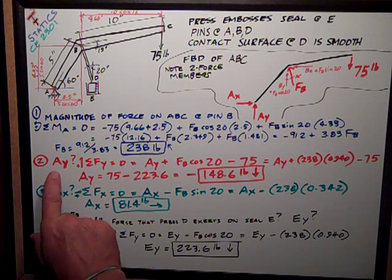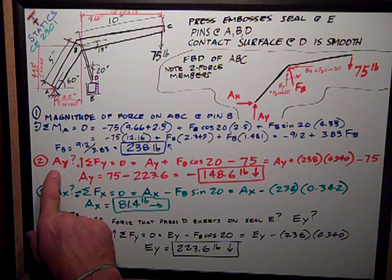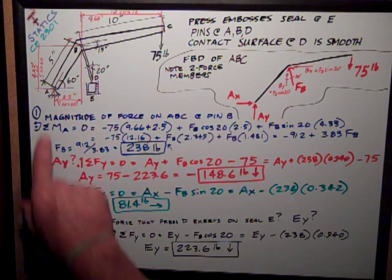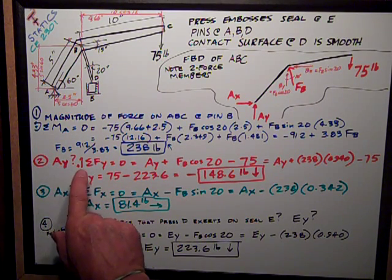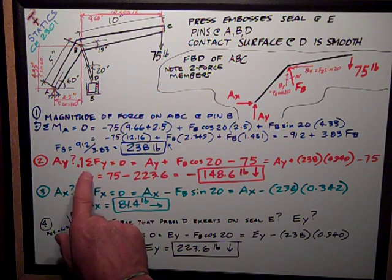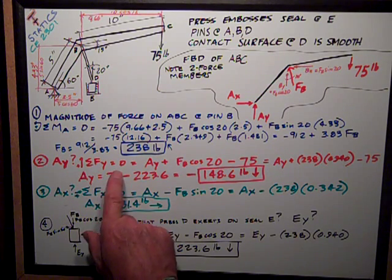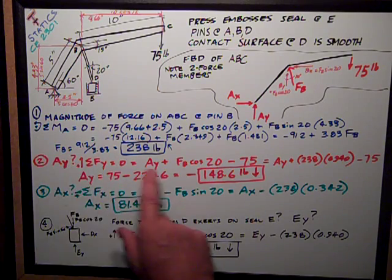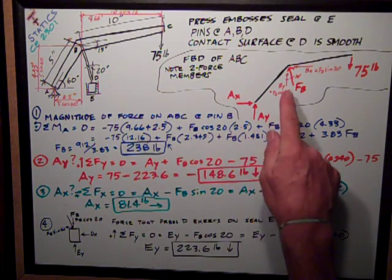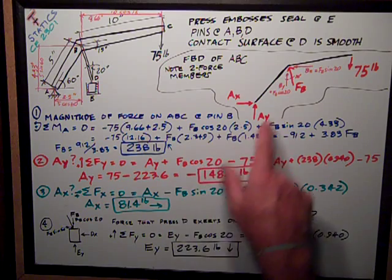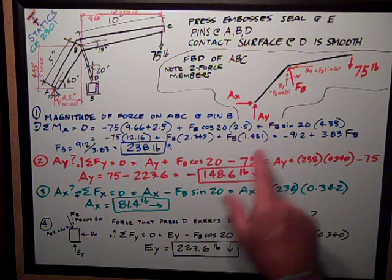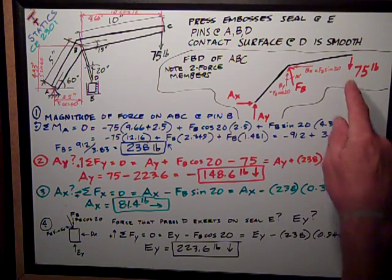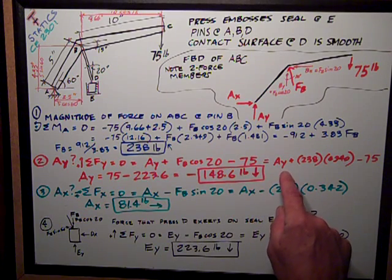Number two, or part two, I'm asked, what's the vertical force at A? It's really AY. Summing forces in the Y direction, positive is up, by my assumption. That's equal to AY, plus, because it's also up, BY, which is really FB cosine of 20, minus 75 pounds. So that's equal to AY, plus 238 pounds, the force in B, times the cosine of 20, minus 75.